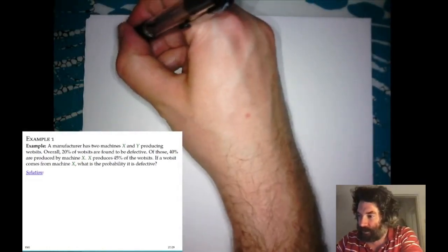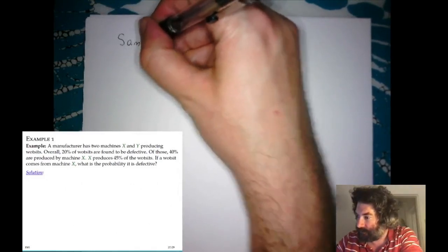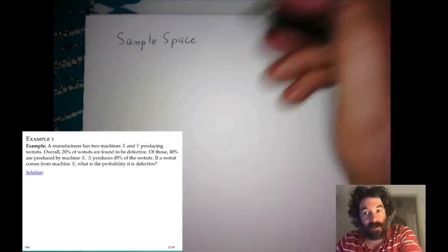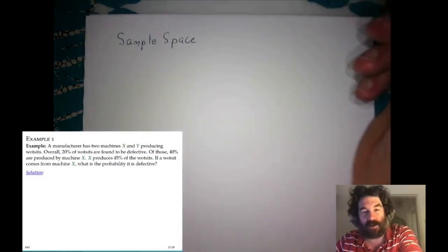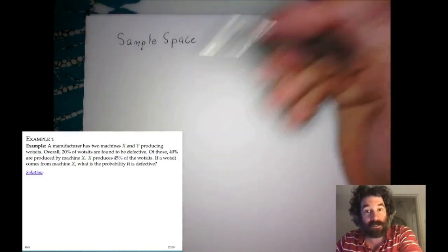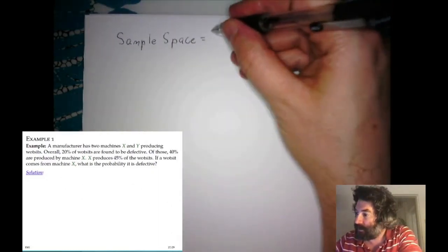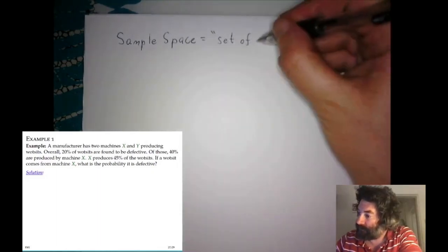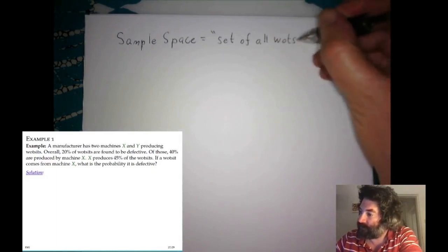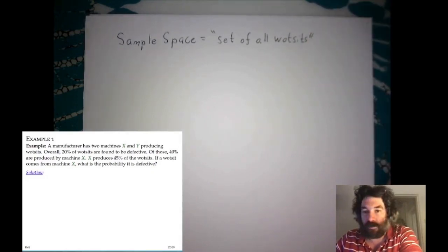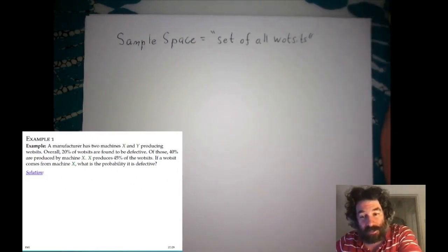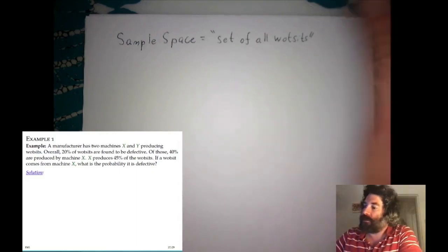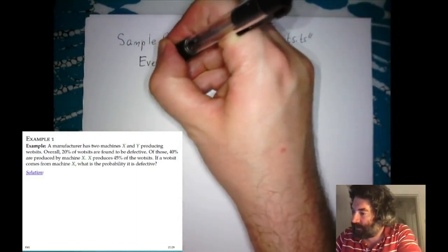So let's consider how we can translate the information given in the statement of the problem into the language of probability. First, let's think about what the sample space should be. We want to select a random widget from all the widgets that are manufactured and then look at its properties. So the sample space is the set of all widgets that are manufactured. The experiment we do is select a random widget and look at whether it's defective and which machine manufactured it.